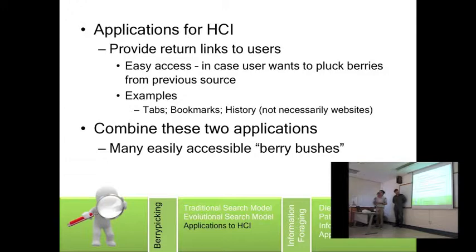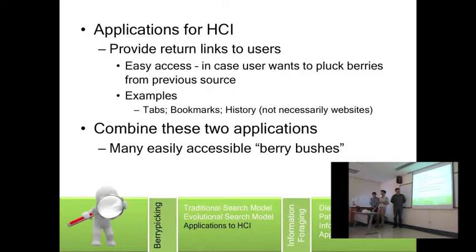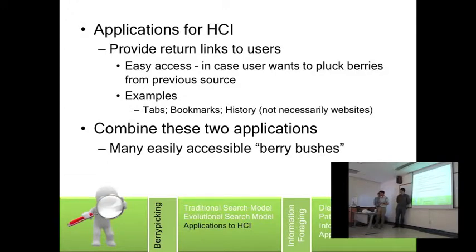Web browsers have evolved over the past decades to help enhance the user experience. Google Chrome has implemented several user interface features to help users find their resources — for example, tabs, bookmarks, and history. History allows users to go back to previous pages, and tabs allow users to find multiple pieces of information concurrently. By combining these features, you will have access to many different 'berries.'